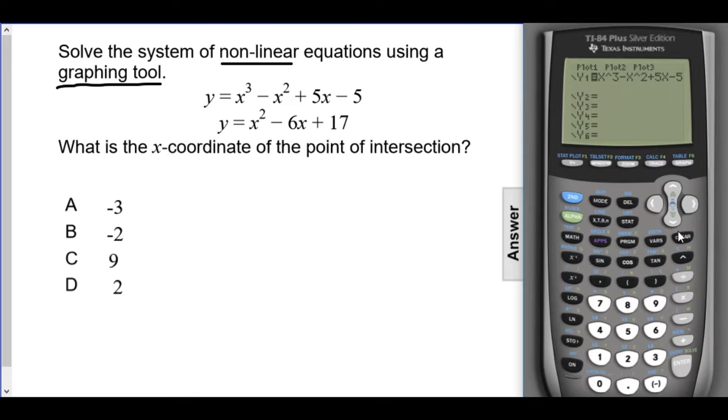I'll then scroll down to the second equation to type it in. So x squared will be x carat 2 minus 6x plus 17.